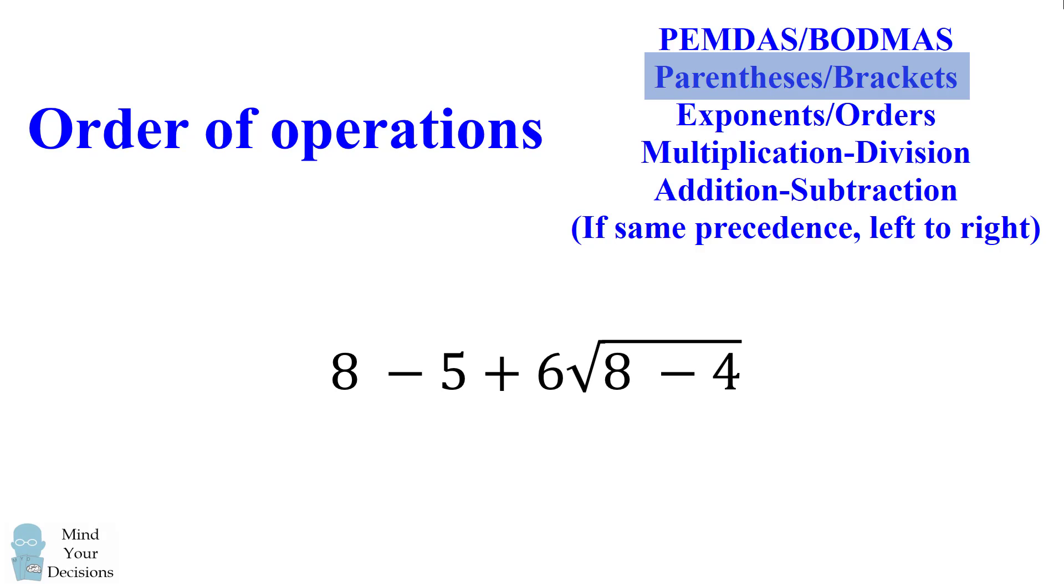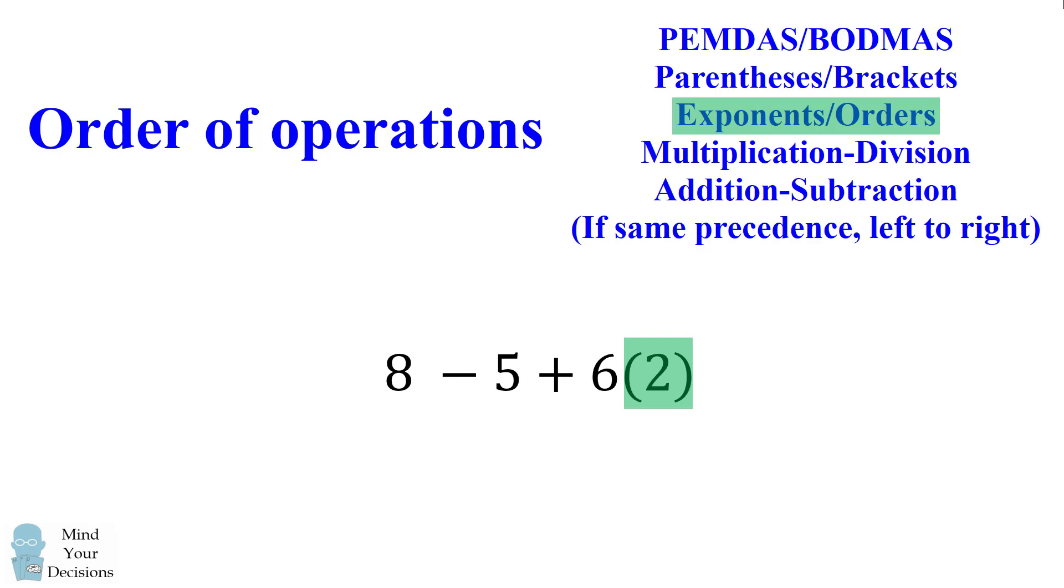We now have an expression, and we need to evaluate the square root, which is 8 minus 4. So again, we have an implied grouping of 8 minus 4. So we take 8 minus 4, and we have the square root of 4. The square root of 4 is equal to 2.